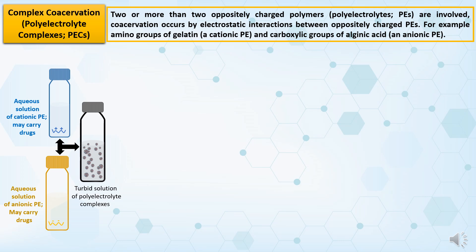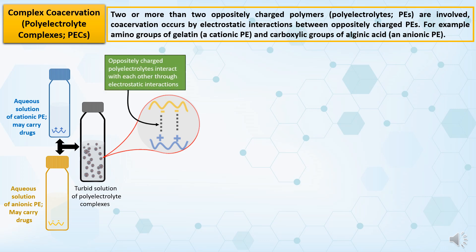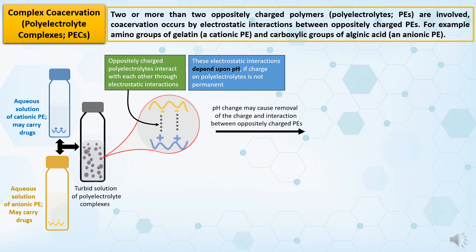Generally, turbidity indicates formation of polyelectrolyte complexes. If we want to entrap a drug within the polyelectrolyte complexes, we can add the drug along with one of the polyelectrolyte solutions depending on the chemical nature of the drug. In these polyelectrolyte complexes, oppositely charged polyelectrolytes interact through electrostatic interactions. This electrostatic interaction depends upon pH if the charge on the polyelectrolytes is not permanent. A pH change may cause removal of the charge and electrostatic interactions, making the complex coacervates unstable.